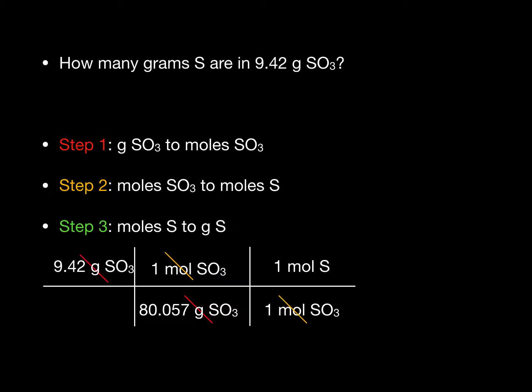In the final step, here we need to convert from moles of sulfur to grams of sulfur. Again, we use the molar mass found in the periodic table. Here we see that one mole of sulfur weighs 32.06 grams, so we can set up the conversion by placing one mole of sulfur in the denominator and 32.06 grams sulfur in the numerator.